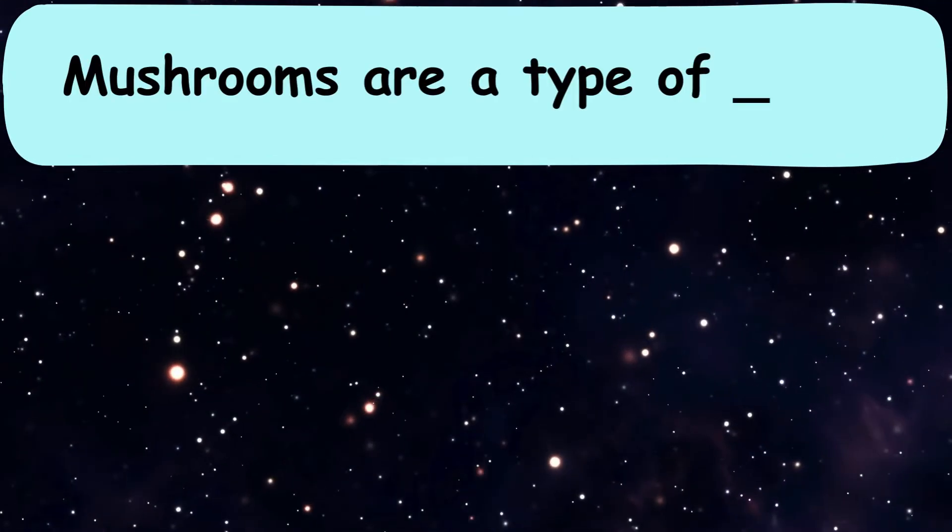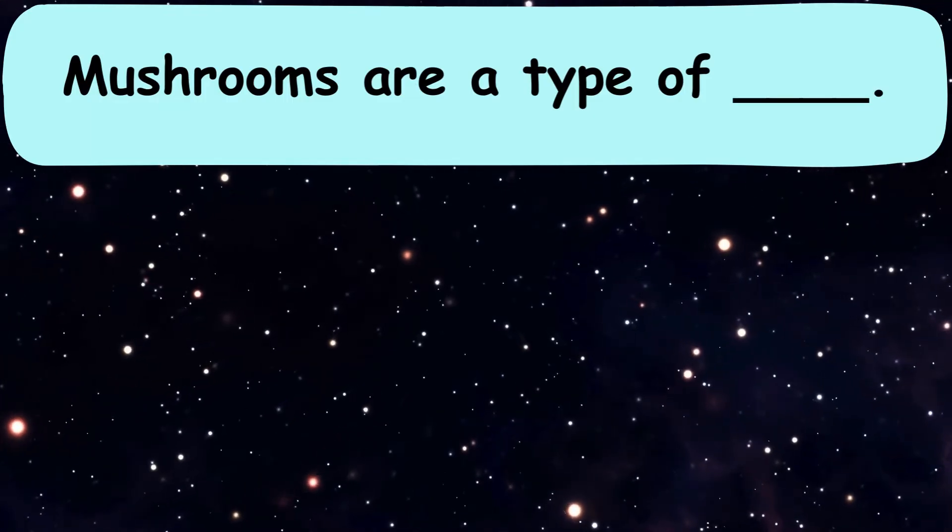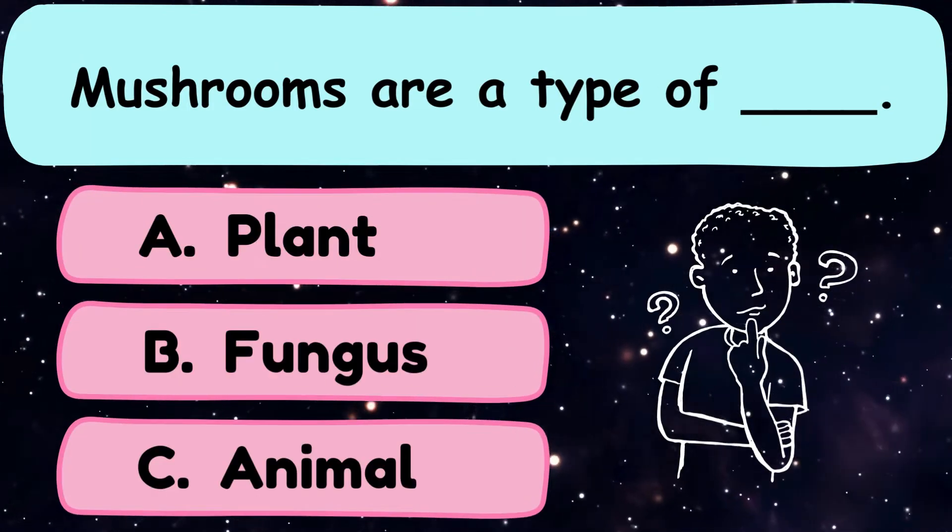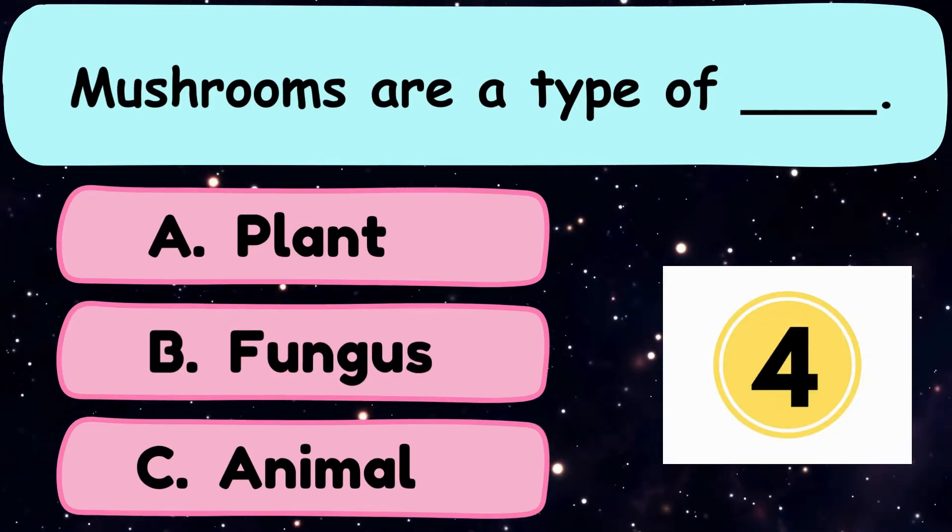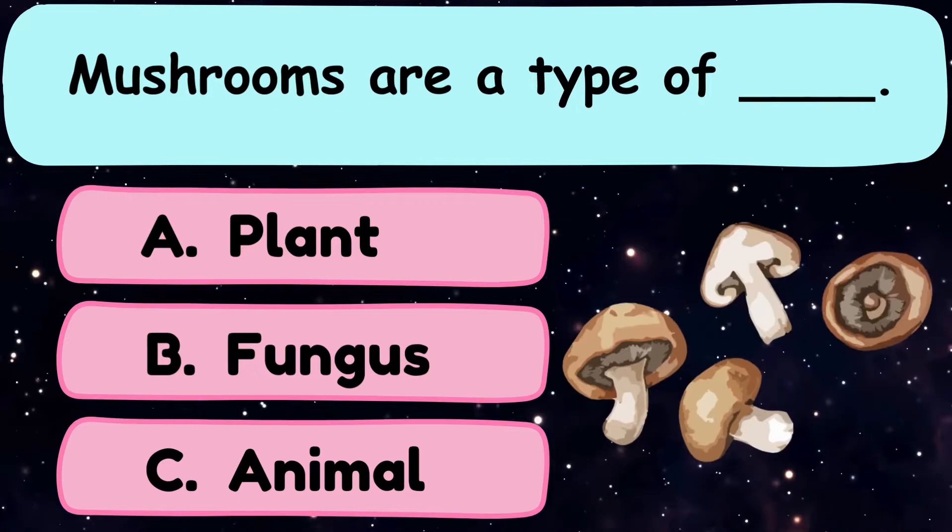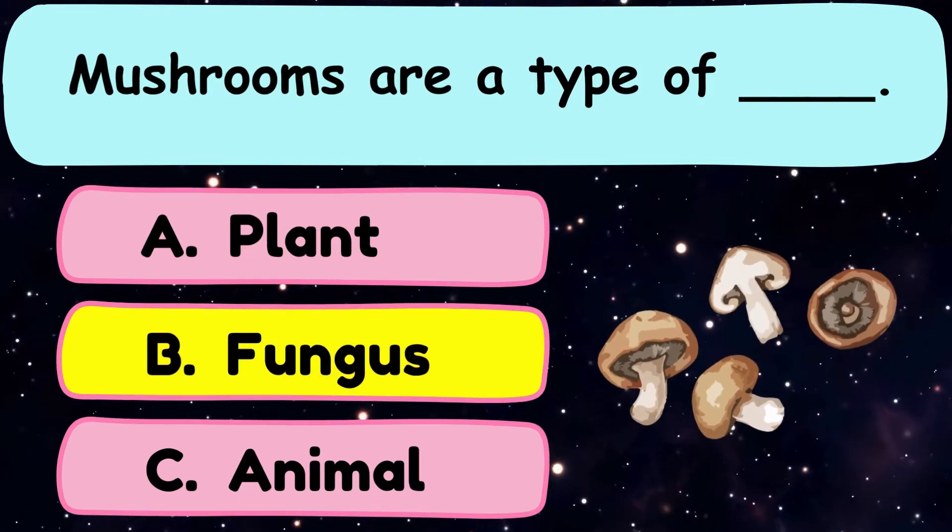Question number 9. Mushrooms are a type of dash. A. Plant, B. Fungus, or C. Animal? And the correct answer is option B. Fungus.